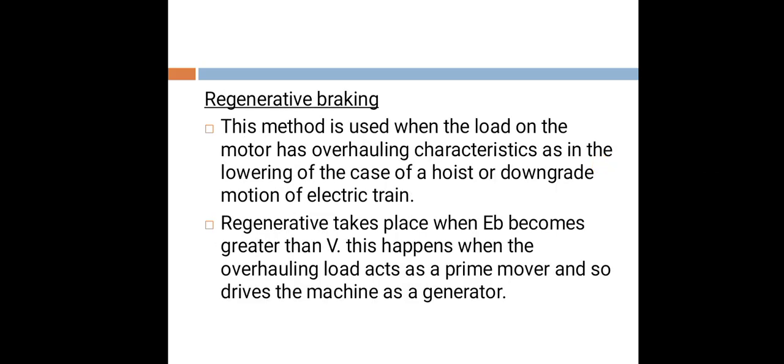Regenerative braking. This method is used when the load on the motor has overhauling characteristics, as in the lowering of the cage of a hoist or downgrade motion of an electric train. Regenerative braking takes place when EB becomes greater than V. This happens when the overhauling load acts as a prime mover and drives the machine as a generator.